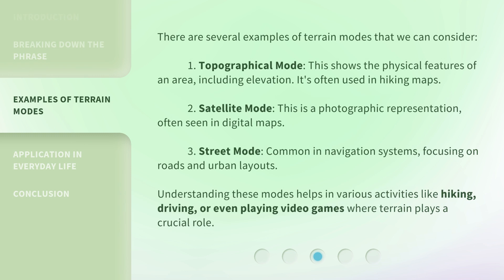There are several examples of Terrain Modes that we can consider. 1. Topographical Mode: this shows the physical features of an area, including elevation, and is often used in hiking maps. 2. Satellite Mode: a photographic representation, often seen in digital maps. 3. Street Mode: common in navigation systems, focusing on roads and urban layouts. Understanding these modes helps in various activities like hiking, driving, or even playing video games where terrain plays a crucial role.